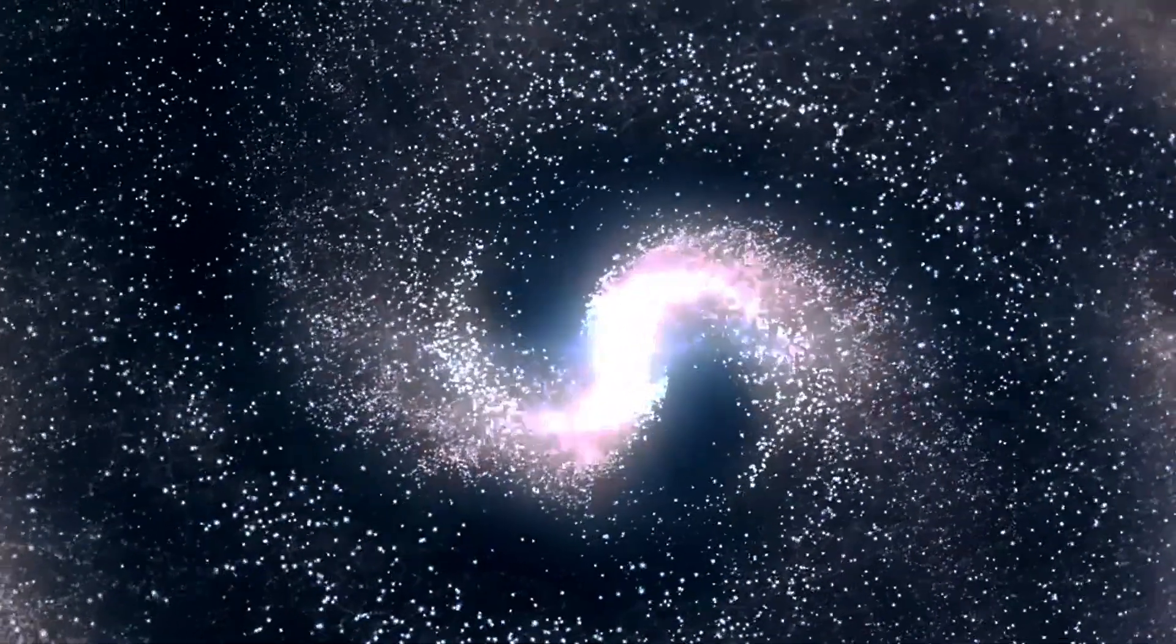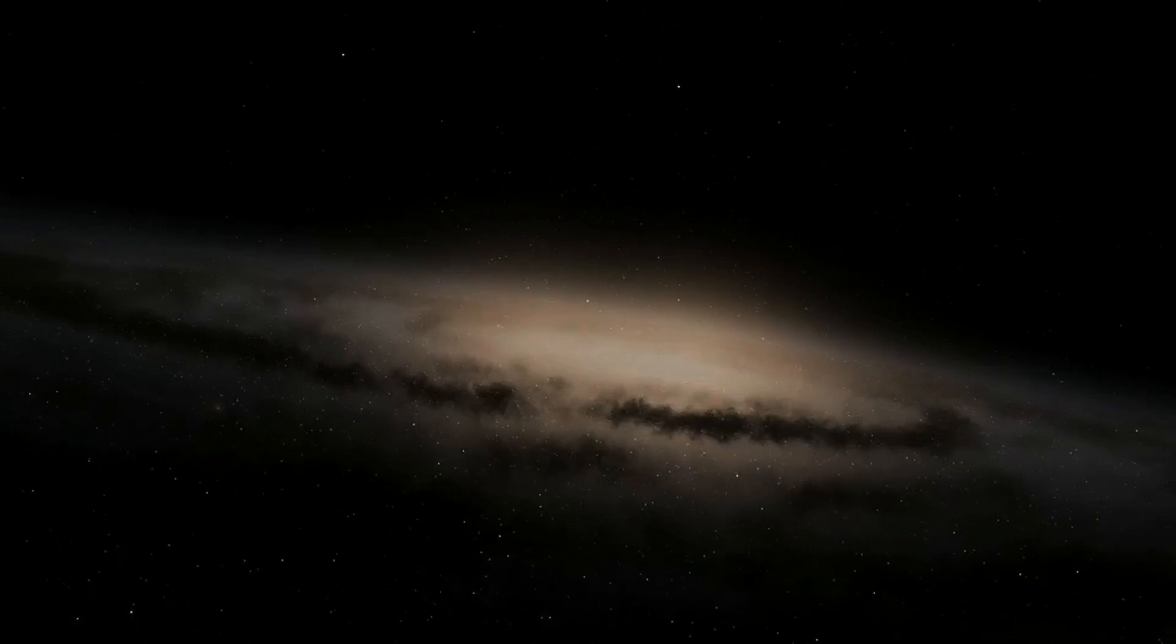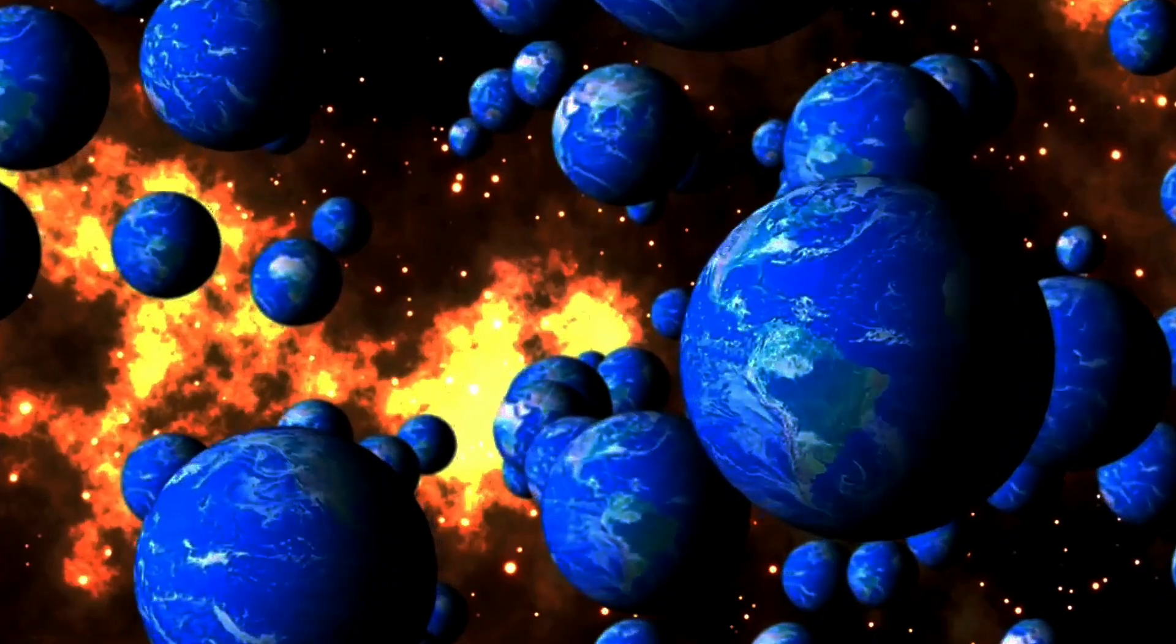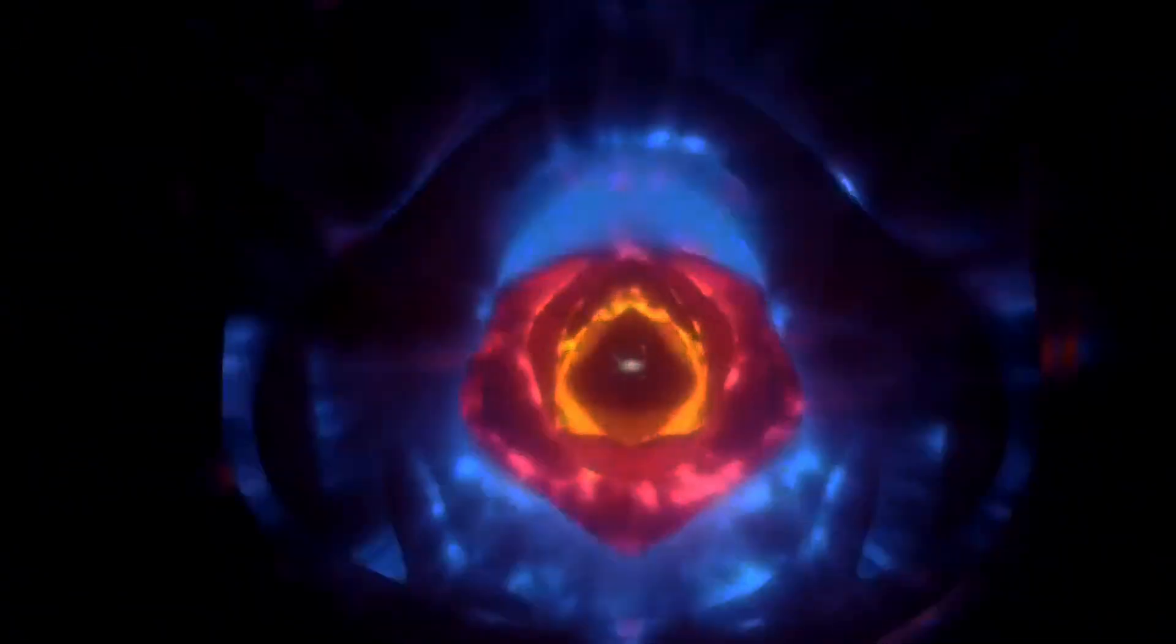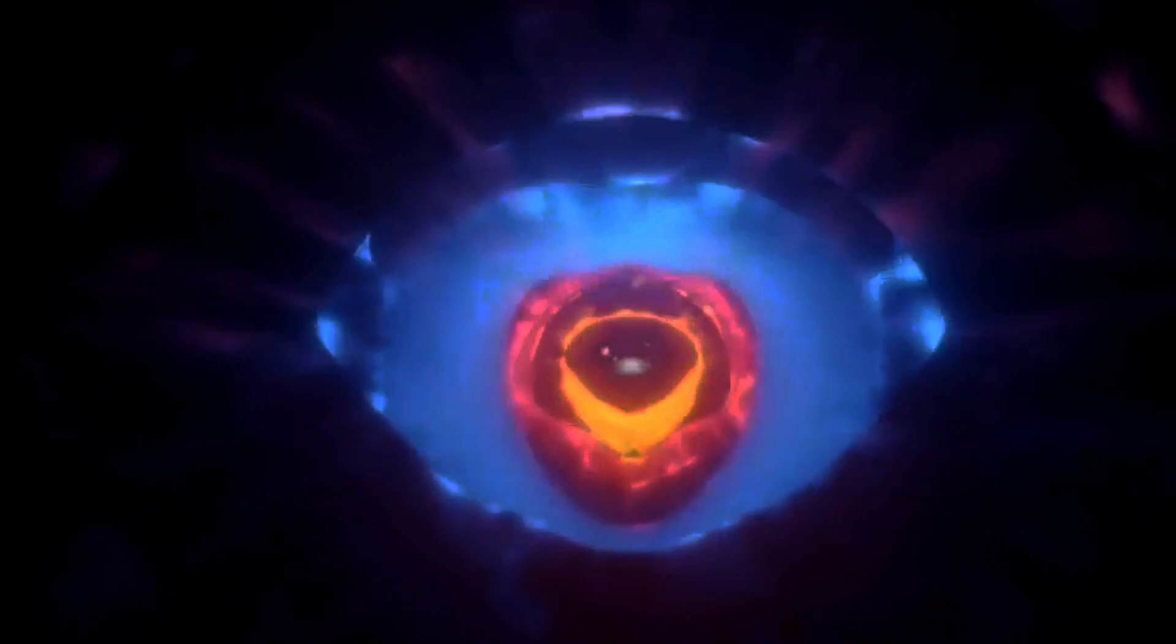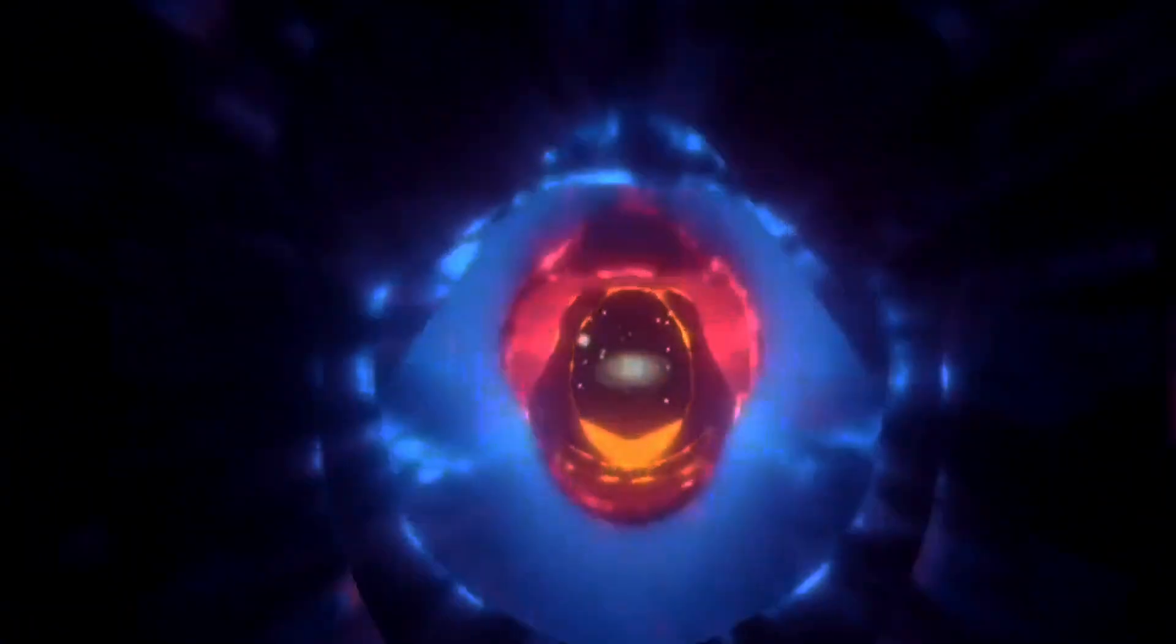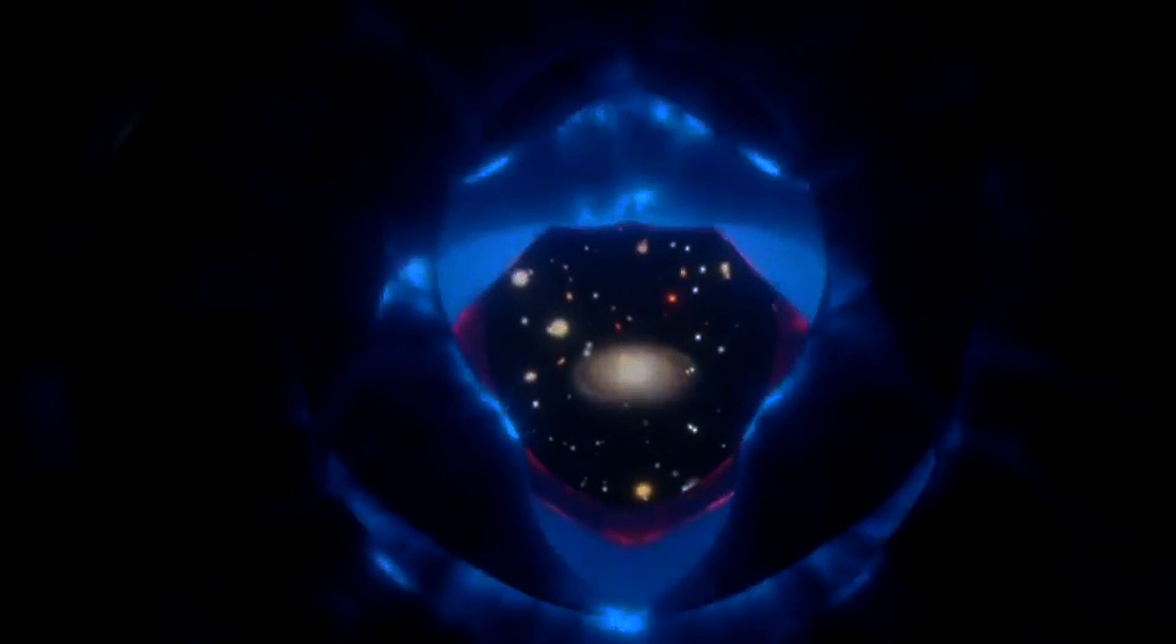Globally, the universe's topology is even more intriguing. Imagine different types of spaces. A simply connected space, like Euclidean space, is infinite and flat. On the other hand, a multiply connected space, like a three-torus, has zero curvature but is finite. The million-dollar question is, which one describes our universe?